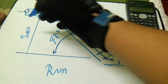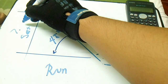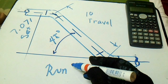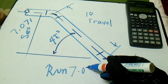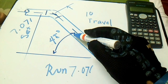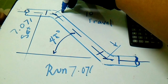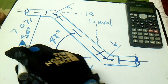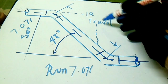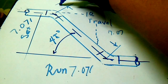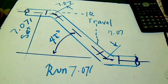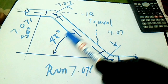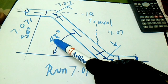Our answer for the set is 7.071. Because we have a 45-degree angle, all sides are equal — this forms a square. So all sides are 7.07, and this is how to compute the set using the given travel and 45 degrees.